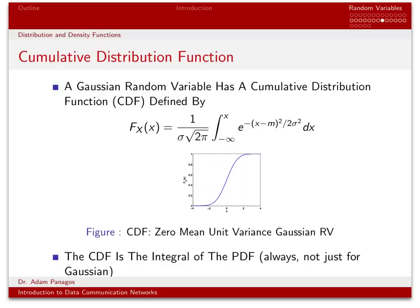If you plot the CDF, you get a picture with the properties we described before. As x gets very large, the CDF approaches 1 asymptotically. As x gets very small, it approaches 0. For instance, the CDF evaluated at 0 equals 0.5, meaning the random variable has a probability of 0.5 of being less than or equal to 0. The probability it's less than or equal to 4 is approximately 0.999.